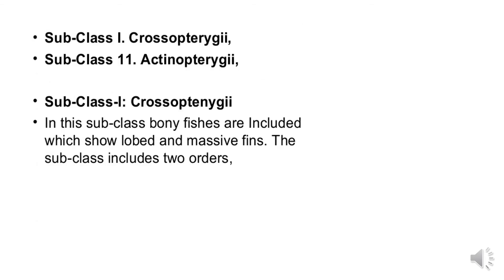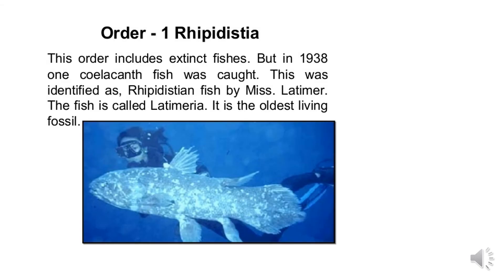Subclass 1 is Crossopterygii and subclass 2 is Actinopterygii. In subclass 1 Crossopterygii, bony fishes with massive lobed fins are included. This class is further subdivided into two orders. Order 1 Rhipidistia includes extinct fishes, but in 1938 one coelacanth fish was caught and identified as a rhipidistian fish.